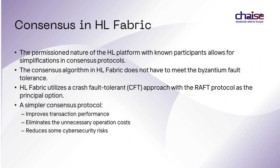The permissioned nature of the HL platform means that network participants, nodes, and users are known to each other. The participants usually have a common goal but do not fully trust each other. Clear identification of the participants simplifies reaching trust in the network. Apart from technical mechanisms, legal agreements can be part of the governance model and can be applied in case of disputes. For this reason, the consensus algorithm can be vastly simplified and does not have to meet Byzantine fault-tolerance.